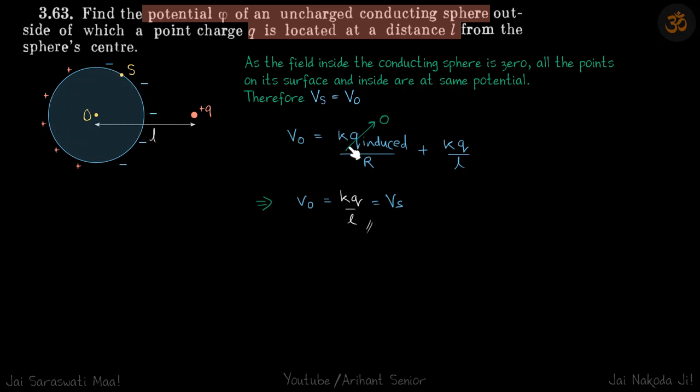Because all the charge is on the outer surface, because of the charge induced we will write potential as K Q_induced by R, and net Q_induced you can see is zero on this conductor, plus because of the plus Q charge, potential because of plus Q charge which is K Q by L. So we are considering this position only.